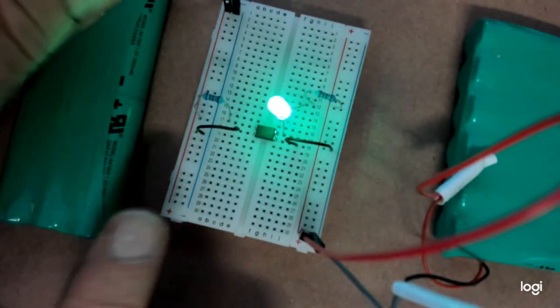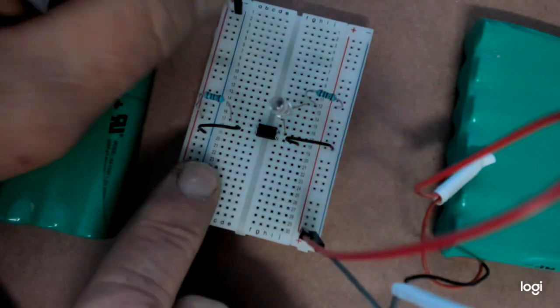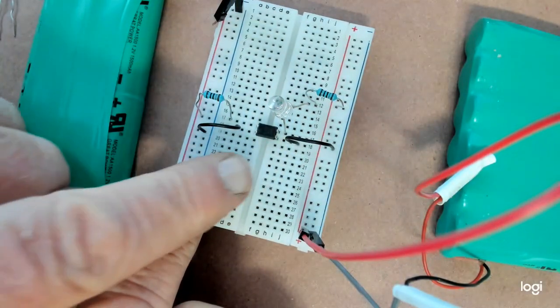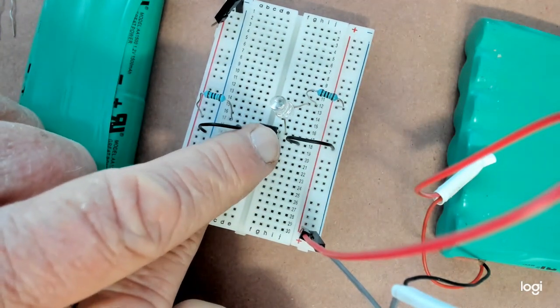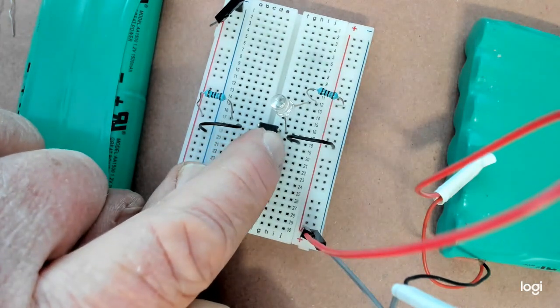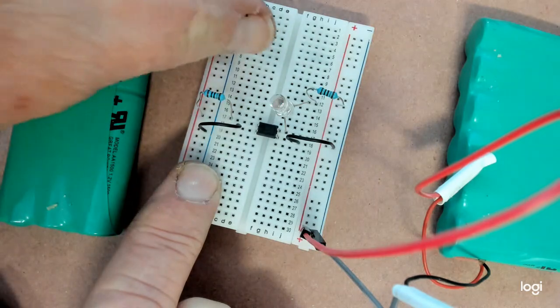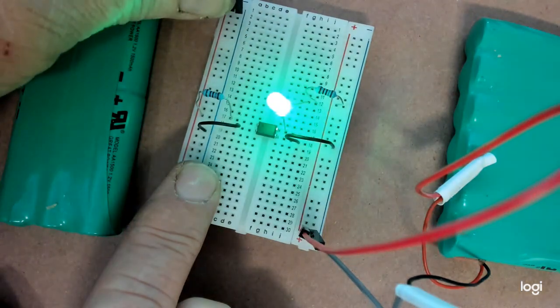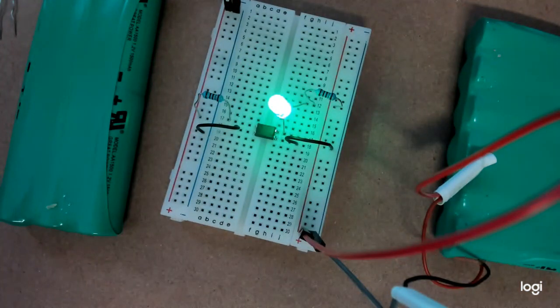So now, if I was to disconnect the power from this side, the light goes out because the optocoupler is no longer, that LED in there is no longer lighting and tripping the photocell. So if I give it the power back, it lights up.